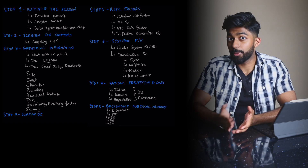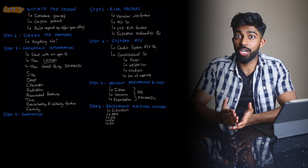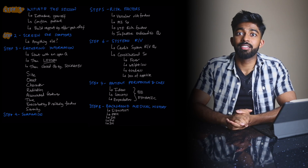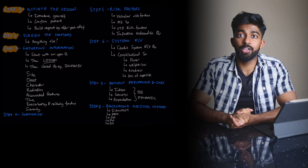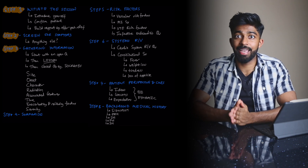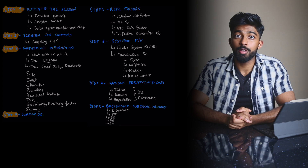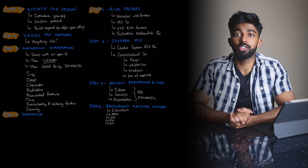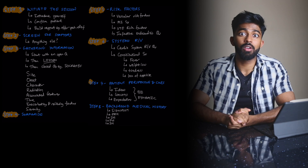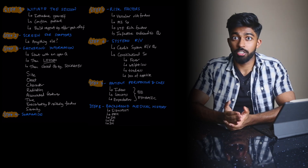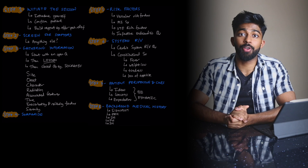Just to summarize, there are eight parts to taking a medical history. Step one: initiate the session and build rapport. Step two: screening for symptoms. Step three: gathering information — open question, listening, then closed focused questioning like SOCRATES. Step four: summarize. Step five: risk factor focused questions. Step six: systems review and constitutional symptoms. Step seven: patient's perspective and ICE. Step eight: background medical history.